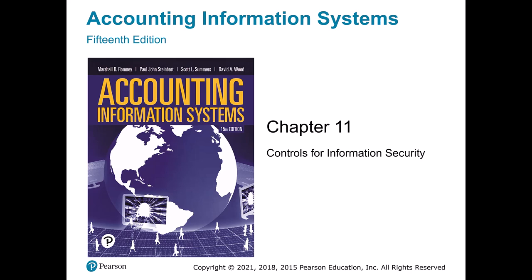This chapter of our AIS textbook talks about controls for information security. We've talked about security quite a bit already in the class and it seems to be a persistent problem around IT, hitting all different kinds of organizations — whether you're a small firm hit with a ransomware attack or AT&T losing virtually all customer information. This chapter will talk about different elements you should be aware of and try to make it practical by discussing personal IT security.